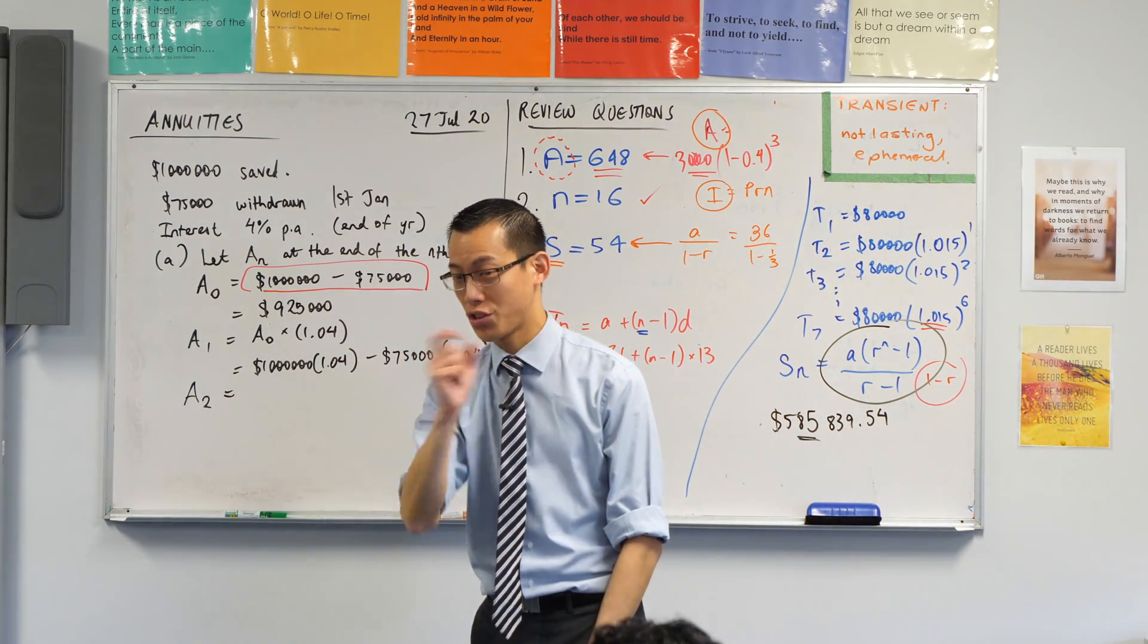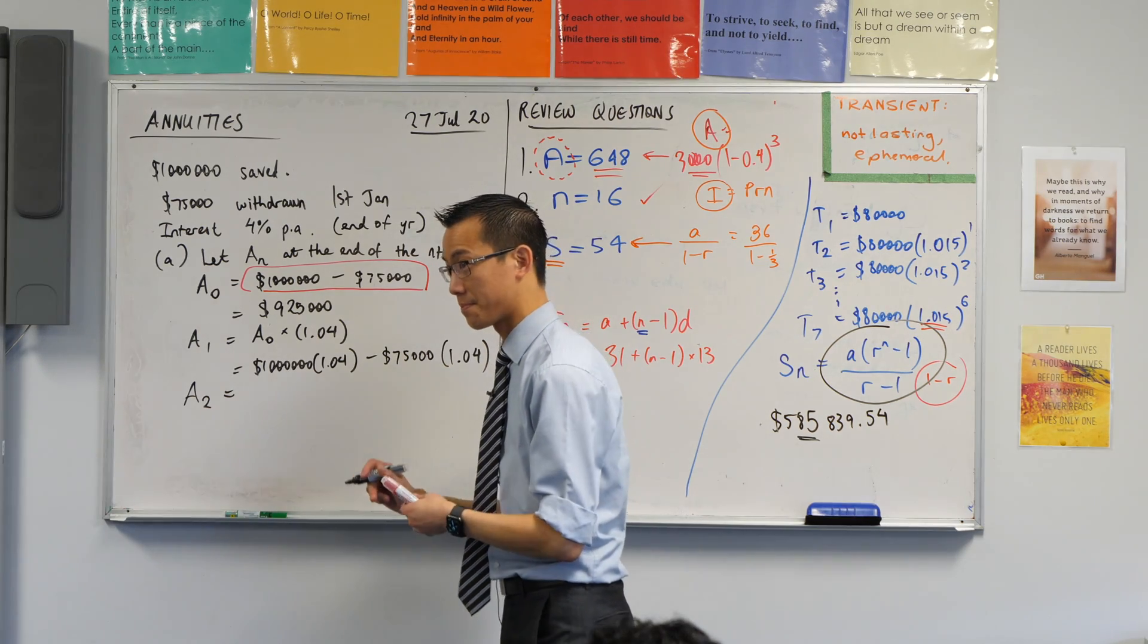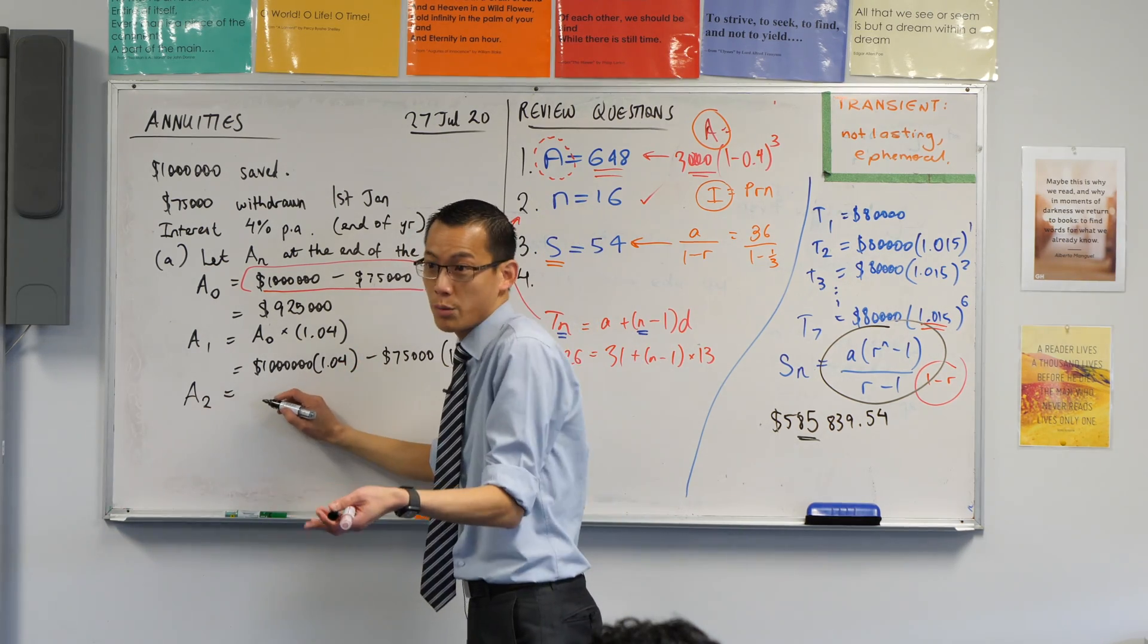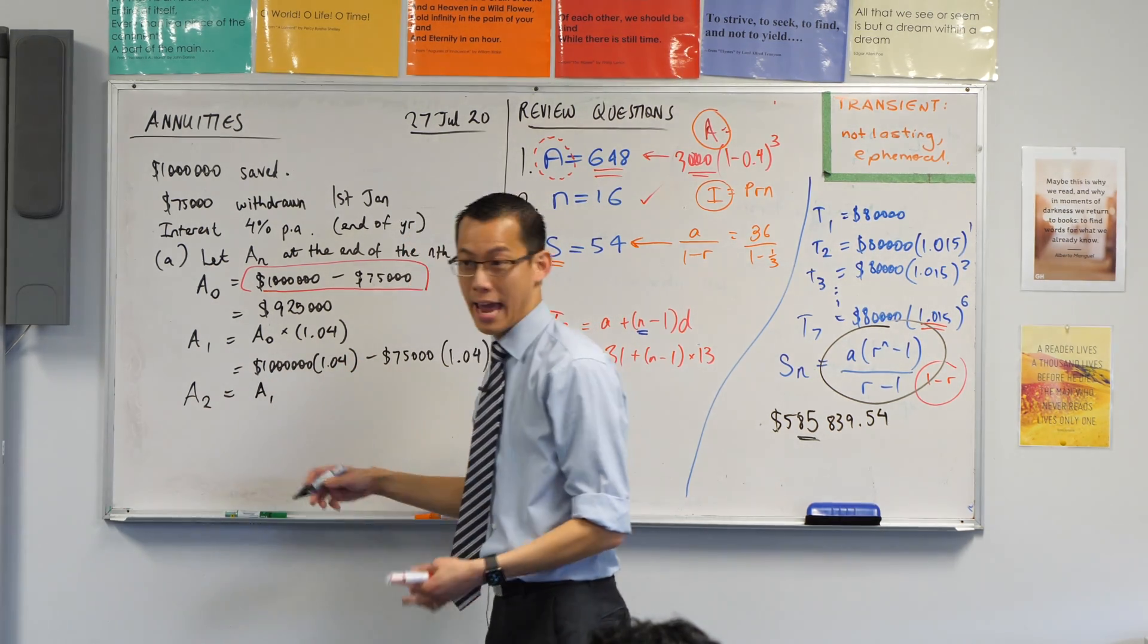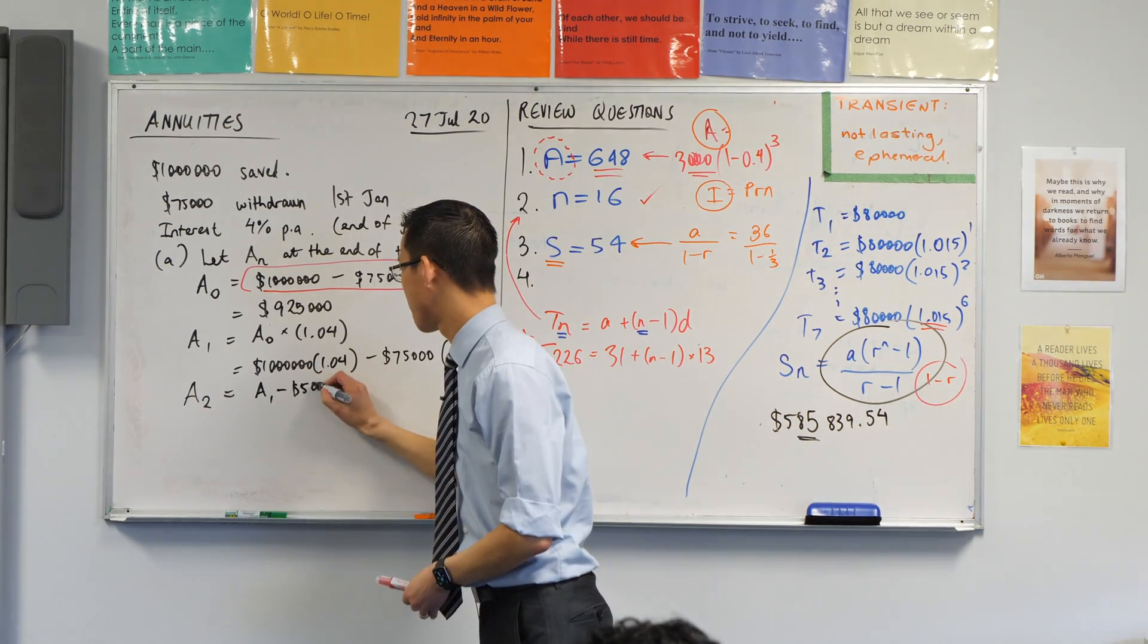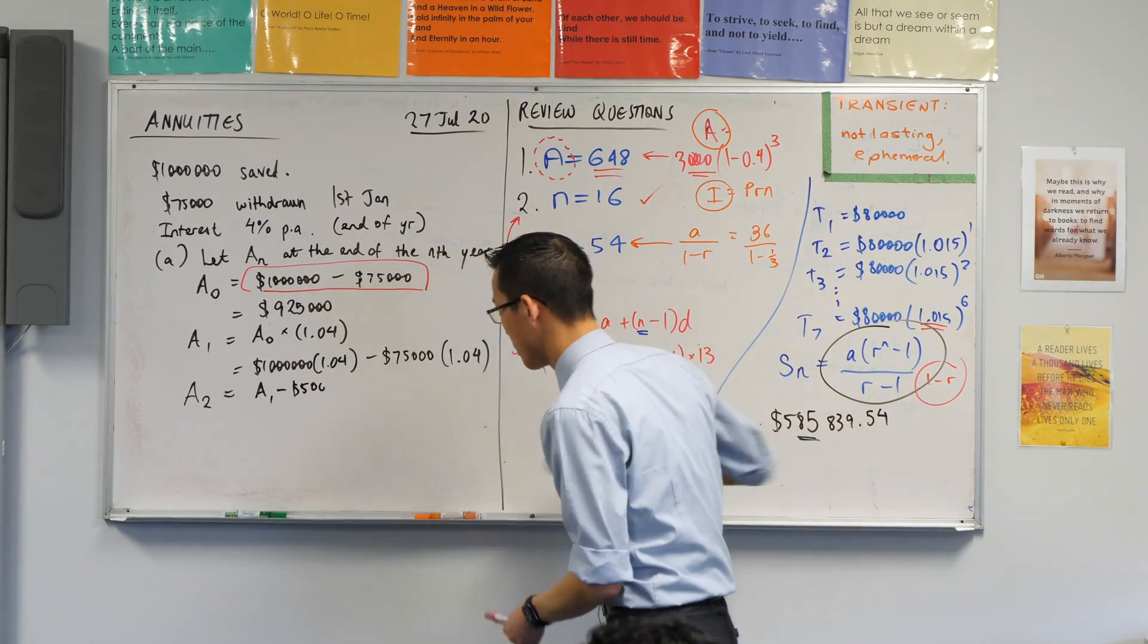There's always two things that happen. Which thing happens first? I'm going to do a withdrawal, right? So I start with whatever I had before, I then withdraw. Sorry, not 50, it's 75.